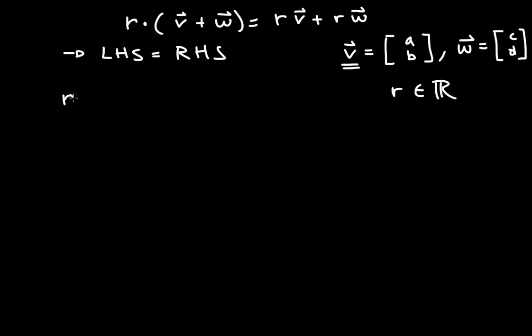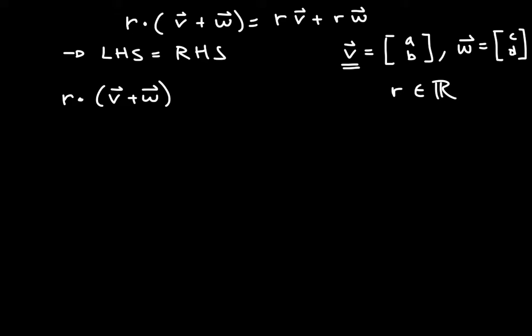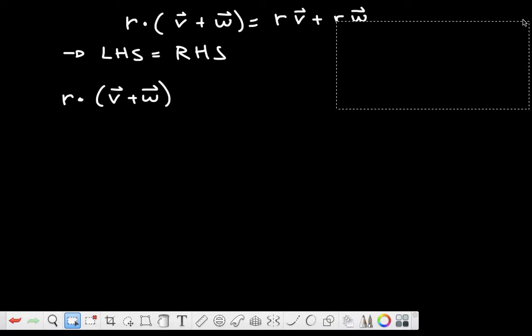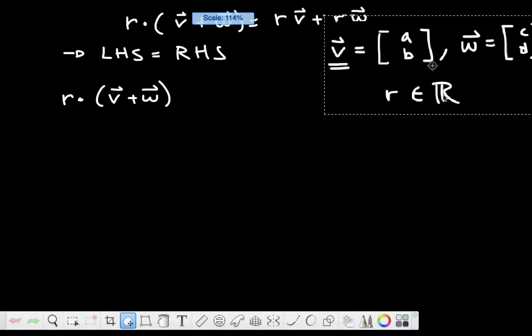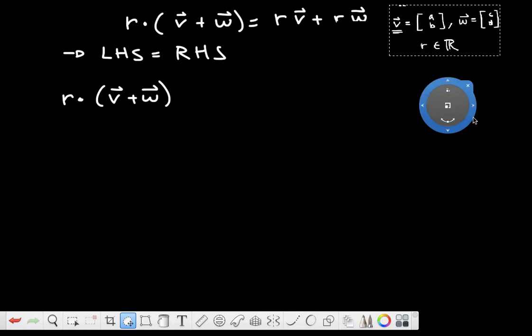So let's start with this side. So r times this would be what? We know what vector v is and we know what vector w is. Let me just move that and make it a little bit smaller so you have the whole proof in one slide. So those are our conditions.